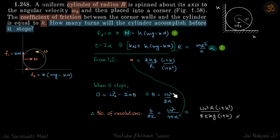So this gives the value of theta to be omega not square by two alpha and number of revolutions will be theta by two pi. So theta by two pi. And if we put the value of alpha here, we will get our answer.